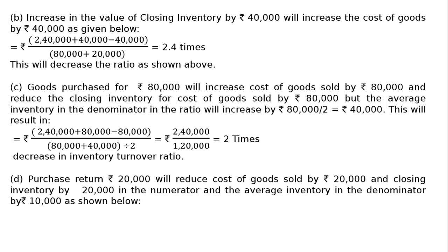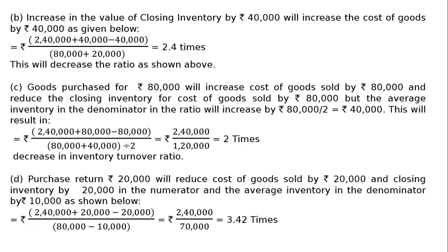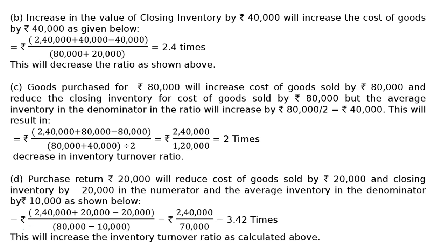Part D: purchase return rupees 20,000. This reduces cost of goods sold by 20,000 and closing inventory by 20,000 in the numerator, so the numerator remains 2,40,000. The average inventory in the denominator reduces by rupees 10,000, giving 80,000 minus 10,000 equals 70,000. The new ratio is 2,40,000 divided by 70,000 equals 3.42 times, which is higher than the original 3 times, so Part D increases the inventory turnover ratio.